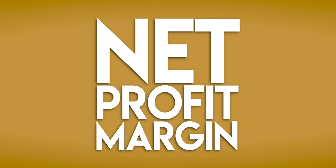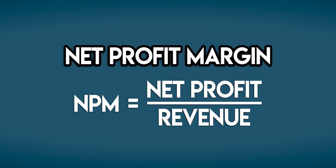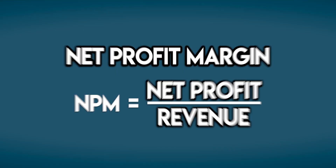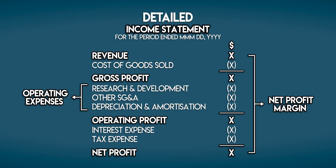So what is Net Profit Margin? Net Profit Margin is net profit divided by revenue. It tells us how much net profit a business is able to generate for each dollar of revenue earned, and it takes into consideration all of the business expenses that we can see above the bottom line in the income statement.